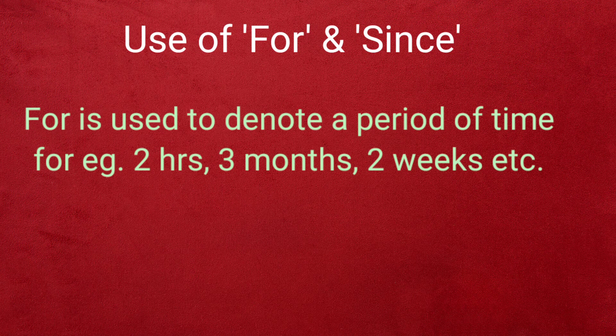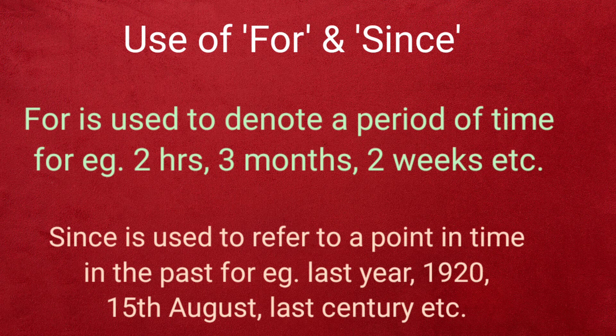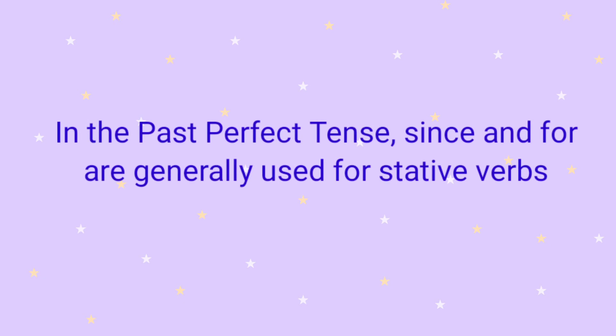Now, the use of 'for' and 'since'. As you know, 'for' is used to denote a period of time — for example, two hours, three months, two weeks, etc. And 'since' is used to refer to a point of time in the past — for example, last year, 1920, 15th August, last century, and so on. In past perfect tense, 'since' and 'for' are generally used with stative verbs.